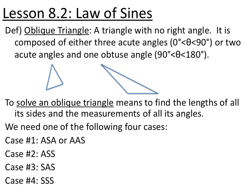The way that we solve an oblique triangle is we find all the sides and angles, and there are four cases. You have angle-side-angle or angle-angle-side — so either two angles and the included side, or two angles and then the following side.